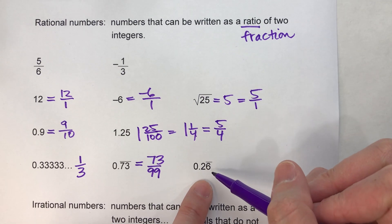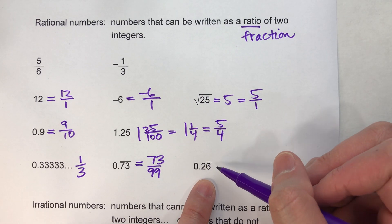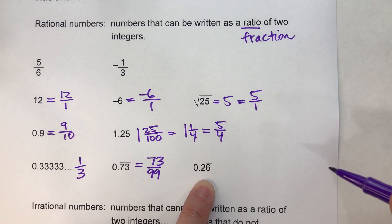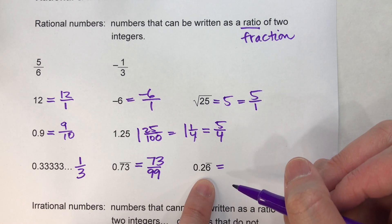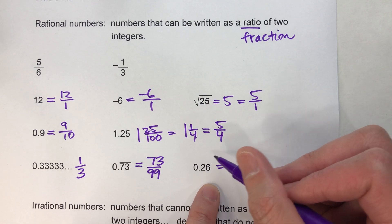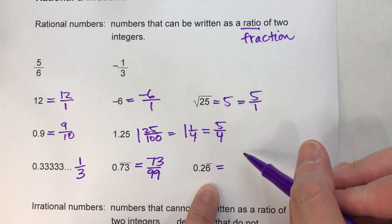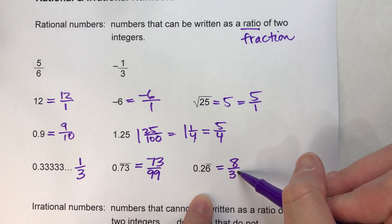And even this one, where just the six repeats: 0.2666... And again, I have a video that shows how to convert this to a fraction using algebra. But if I wanted to write this as a fraction, it would be 8/30.